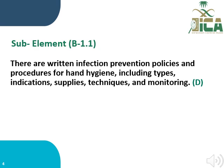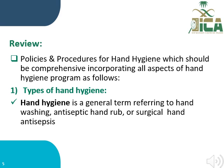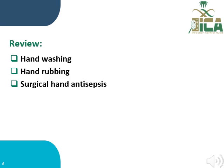Sub-element B1.1: there should be written infection prevention policy and procedure for hand hygiene, including type, indication, supplies, technique, and monitoring. For this sub-element, we need to evaluate and review the documentation. Review the policy and procedure for hand hygiene, which should be comprehensive incorporating all aspects of the hand hygiene program. The types of hand hygiene include hand washing, antiseptic hand rub, and surgical hand antisepsis — all should be mentioned in the policy.